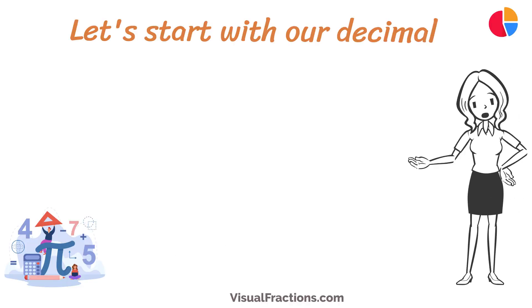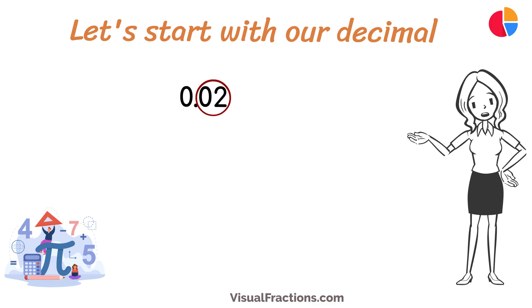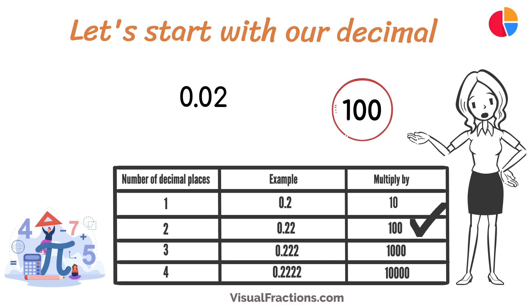Let's start with our decimal, 0.02. Notice there are two digits to the right of the decimal. This places it in the hundredths position.